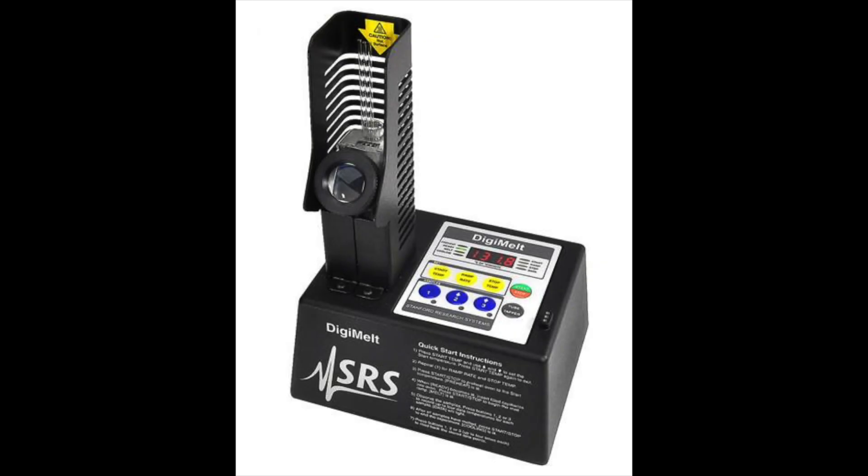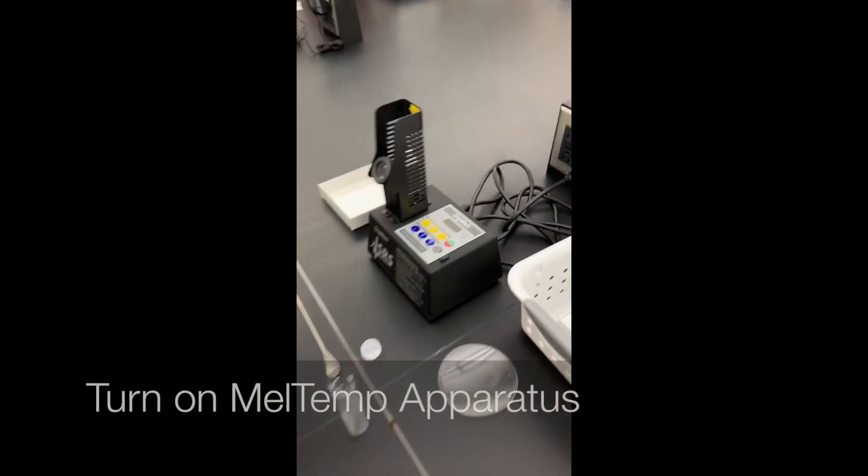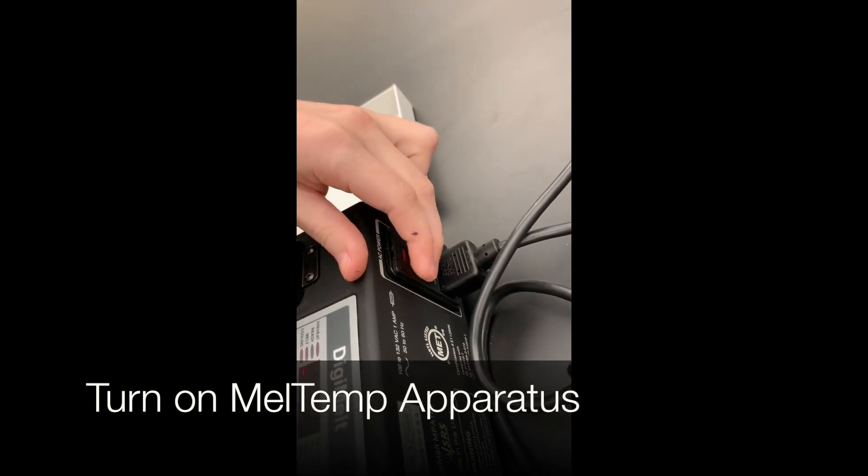To obtain a melting point range of products in the organic chemistry lab, we use a melt temp apparatus. To begin, you will turn on the melt temp apparatus using the on-off button.